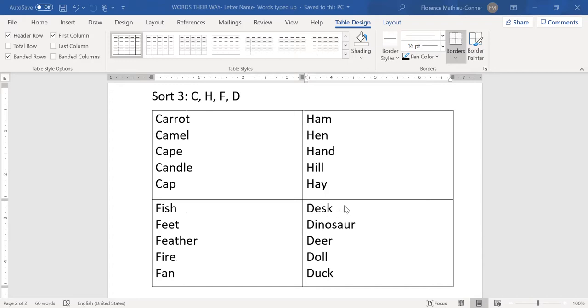In d, we have desk, dinosaur, deer, doll, and duck are our words starting with d.